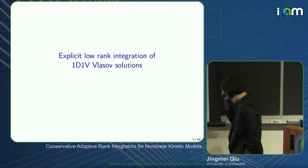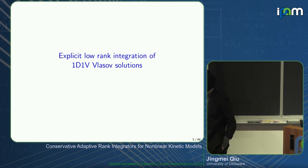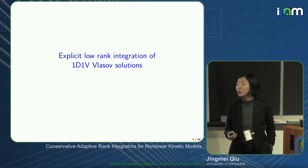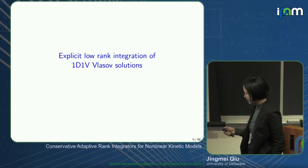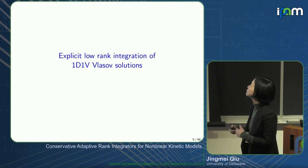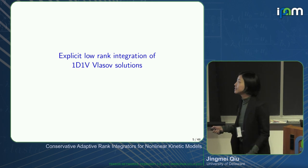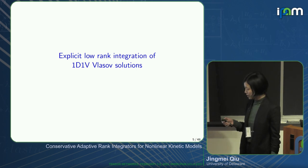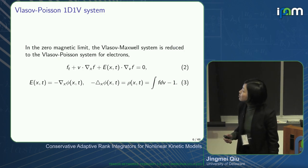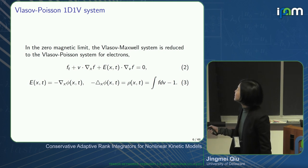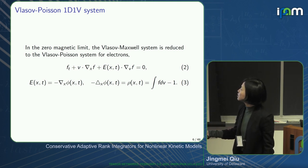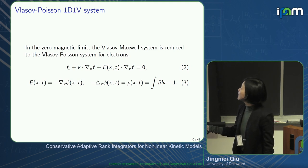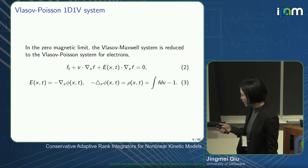Now let me show our strategy in the explicit setting. To simplify discussion, we consider just the matrix setting — one-dimensional in physics space and one-dimensional in velocity space — the Vlasov equation. For the Vlasov equation: F_t + v F_x + E F_v = 0, where the electrostatic field is determined from the Poisson equation.